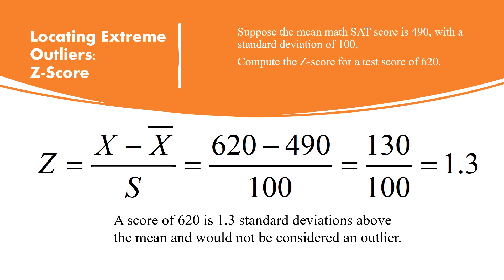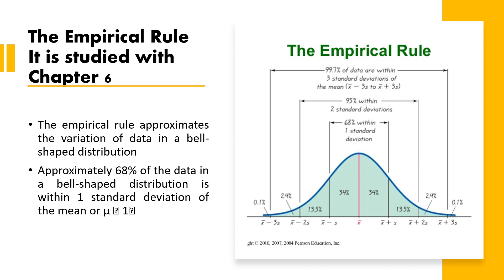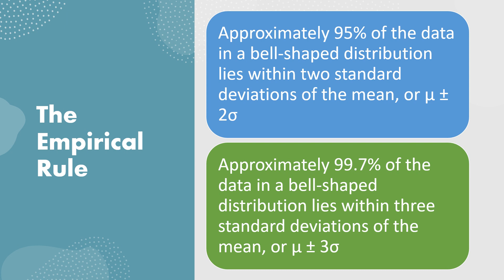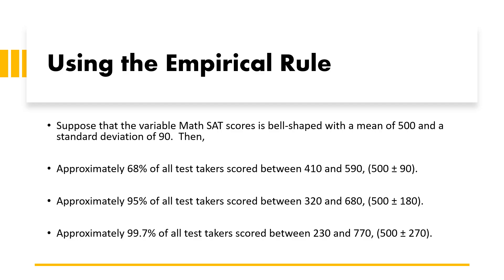Another way to locate outliers is the empirical rule, also studied in chapter six. The empirical rule approximates the variation of data in a bell-shaped distribution. Approximately 68 percent of the data lies within one standard deviation of the mean, and approximately 95 percent of data lies within two standard deviations of the mean.